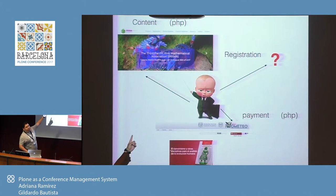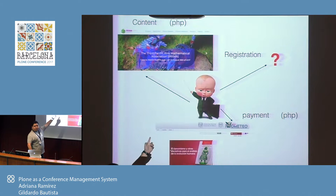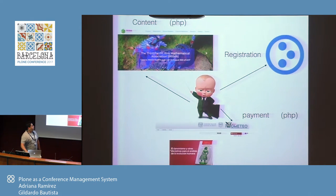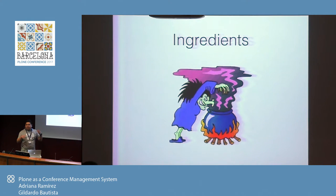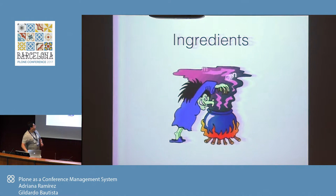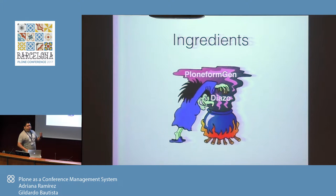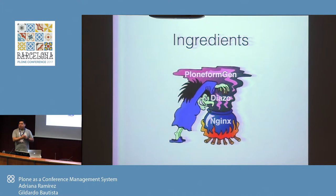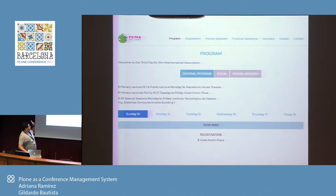Unfortunately, the other sites were in PHP and the payment website was also in PHP, while we decided to use Plone. So how do we integrate this? We used some ingredients for this mixture: Plone for the registration part, Diazo so we can share the theming with the PHP site, and Nginx to redirect depending on which URL the client is requesting. The result was something like this — this was the main page of the site, a PHP page.